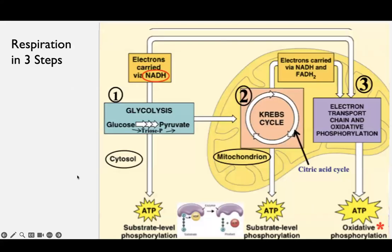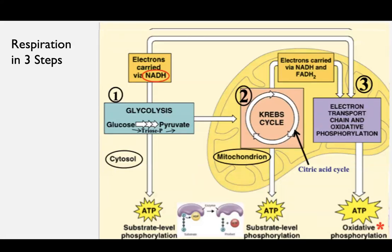Respiration can be broken down into three steps. Step one is glycolysis. Step two is the Krebs cycle. And step three is the electron transport chain. We'll talk about what each one of these cycles does and how they all work together.